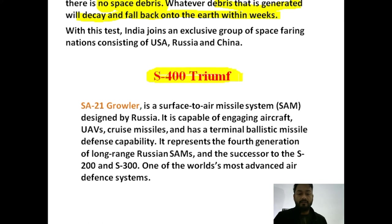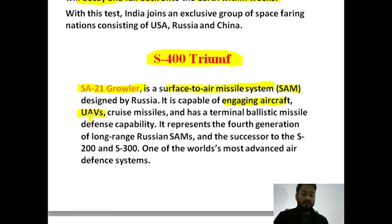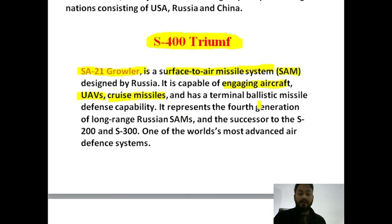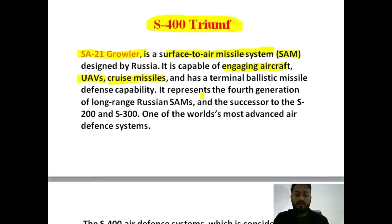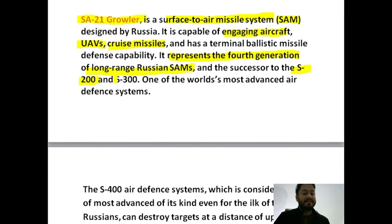Next in the series is the S-400 Triumf, which India has purchased from Russia. It is also known as SA-21 Growler. It is a surface-to-air missile system capable of engaging aircraft, UAVs (unmanned aerial vehicles), cruise missiles, and it has terminal ballistic missile defense capability. It is regarded as the fourth-generation long-range Russian SAM system and is a successor to the S-200. It is considered the world's most advanced air defense system.